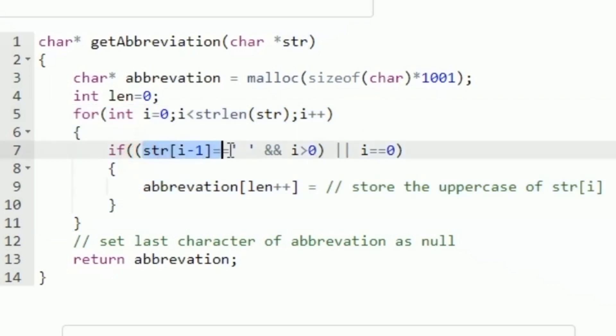I am checking whether str[i-1] is an empty space, and also i should be greater than 0 because if i equals 0 then i-1 will be -1 which is out of range. So whenever i is greater than 0 we check whether the previous character is an empty space or not. This logic will find the abbreviation for the intermediate words.